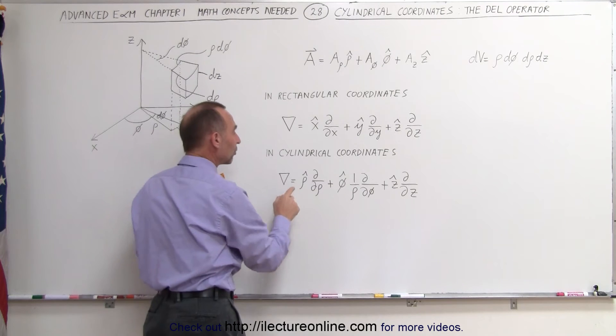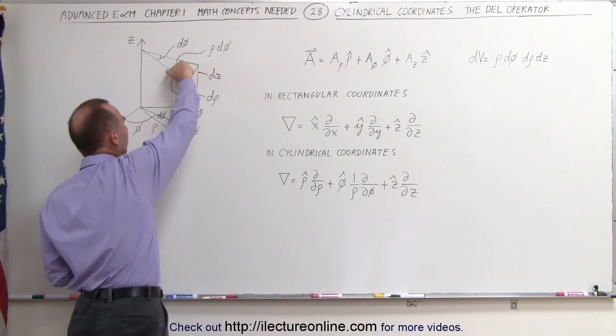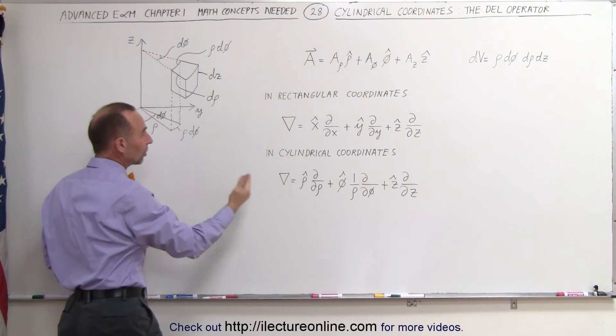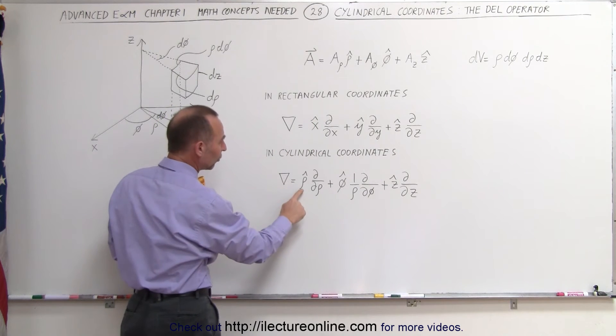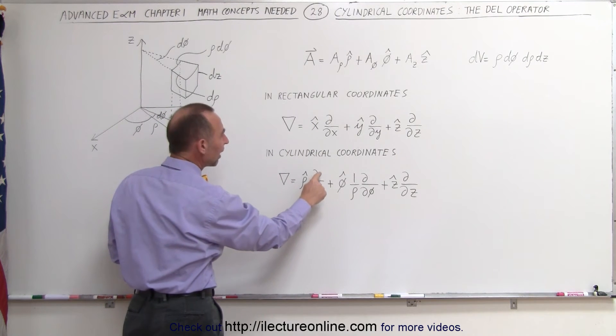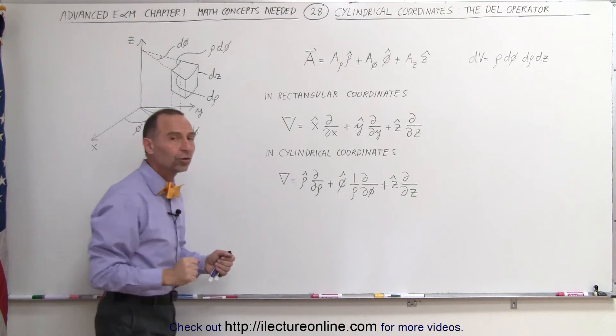And here in the rho direction notice that that's a direction perpendicular to the z axis straight outward. We're talking about the change in the vector in this direction only. And so that looks a lot like the x direction. It's a linear direction. So we have the rho unit vector times the change of the function with respect to rho. And of course we need to take the partial derivative of that.